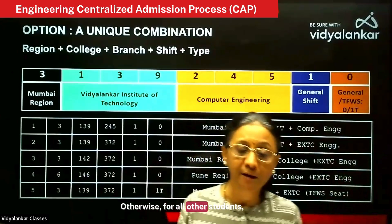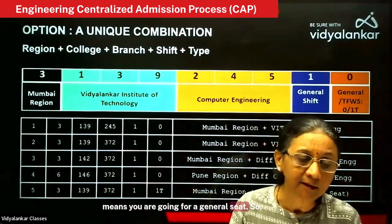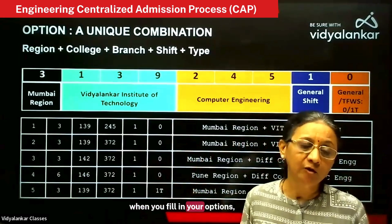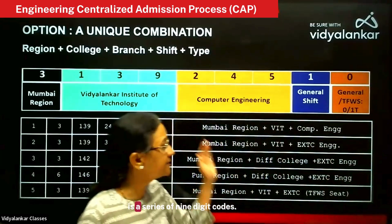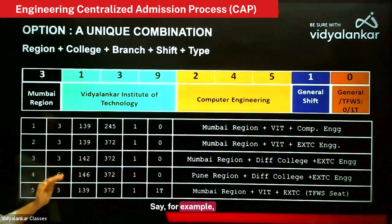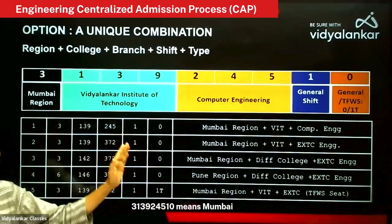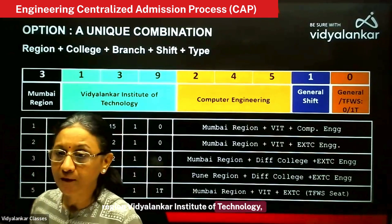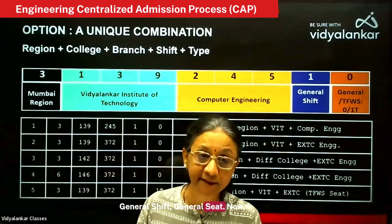Otherwise, for all other students, the last digit will be 0, meaning you are going for a general seat. So when you fill in your options, what you will see on the screen is a series of 9 digit codes. For example, 3139-24510 means Mumbai Region, Vidyalankar Institute of Technology, Computer Engineering, General Shift, General Seat.